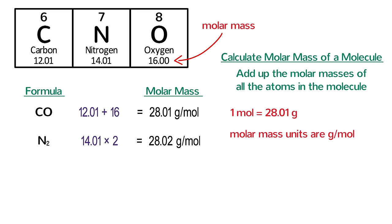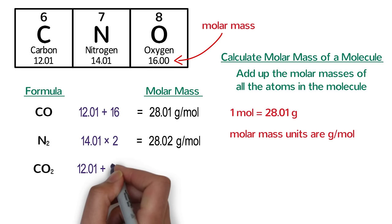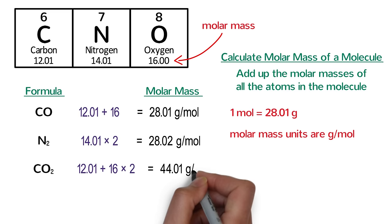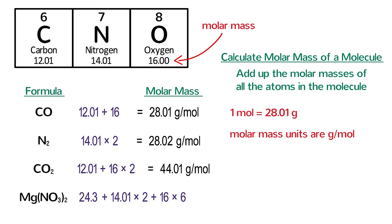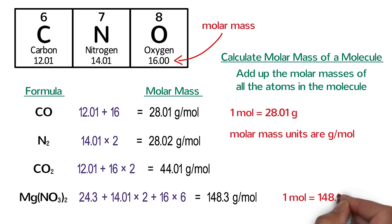For carbon dioxide, there is one carbon and two oxygen atoms, so we add 12.01 for carbon and 16 times 2 for the two oxygens, which gives us a molar mass of 44.01 grams per mole. We can do the same thing for ionic compounds, like magnesium nitrate. The molar mass of magnesium is 24.3. Because there are two nitrates in the formula, that means we have two nitrogen atoms and six oxygen atoms. So we add 24.3 plus 14.01 times 2 plus 16 times 6, which works out to be a molar mass of 148.3 grams per mole. We can write the molar mass as an equality: one mole of magnesium nitrate equals 148.3 grams. That is our conversion factor between grams and moles.